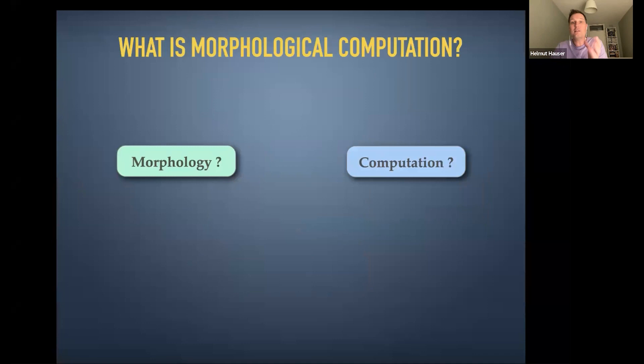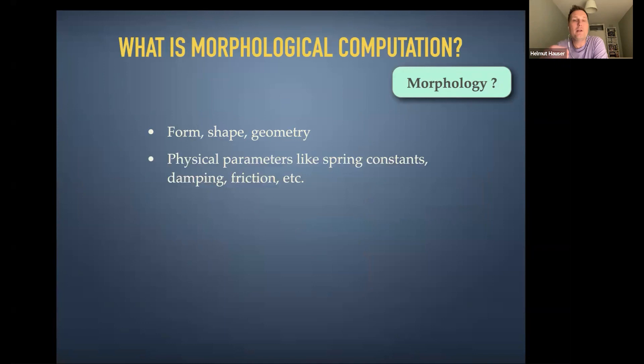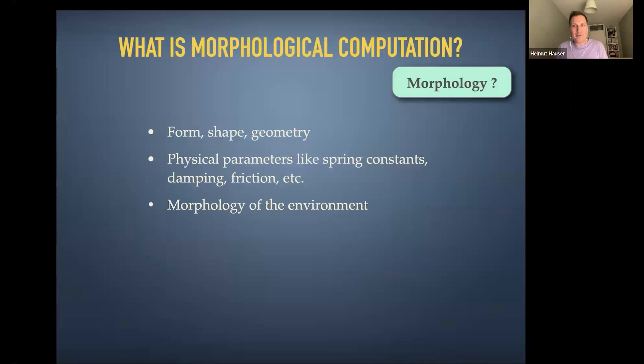Starting with morphology: based on prior examples, we talk about the form, the shape, and the geometric assembly of a robot. But we also have to consider all the physical properties that describe dynamic properties of the body — mechanical things like spring constants, damping, friction, but also chemical gradients, electrical charges, and so on. The third crucial component is the environment — a robot is always embedded in a bigger system, must interact physically with the environment, and that environment needs to be part of the morphology as well.